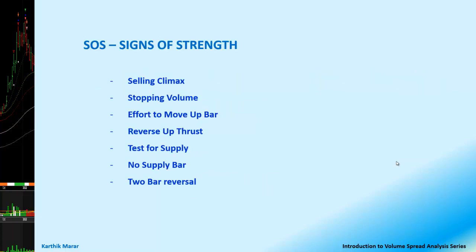Before we move further, let's quickly review the signs of strength. The signs of strength are the Selling Climax, the Stopping Volume, Reverse Up Thrust Bar, Effort to Move Up Bar, Test for Supply, No Supply Bar, and 2 Bar Reversal. Of these, we have already covered the Selling Climax, the Stopping Volume, and the Reverse Up Thrust.